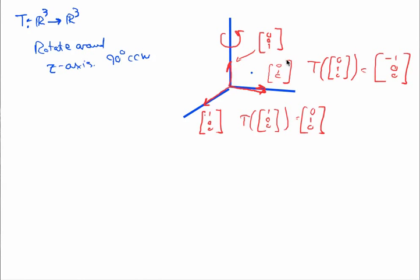So we have enough info now to write down the standard matrix for this transformation. T(x) is equal to, the first column is going to be (0,1,0), the second column is (-1,0,0), and the third column is (0,0,1), and I'm multiplying by x. So this rotation in three space is actually implemented by this matrix multiplication. This is a much easier thing to work with than trying to visualize rotations all over the place.